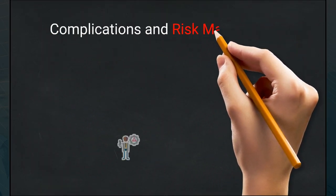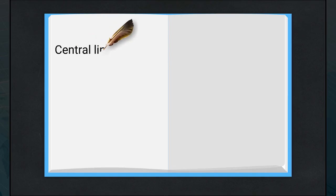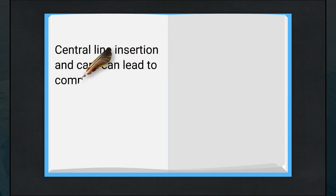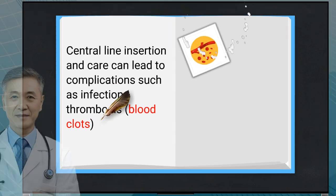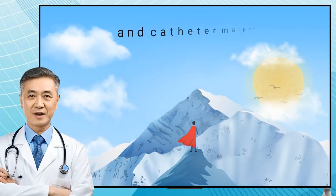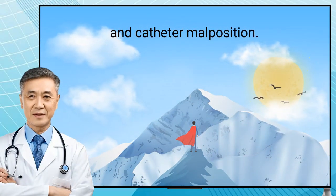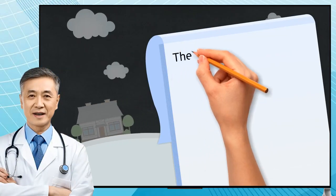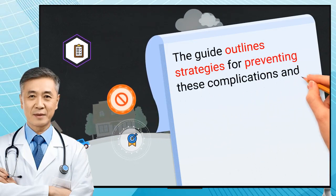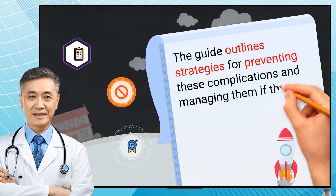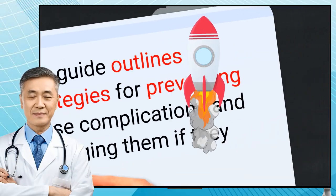Complications and risk management: central line insertion and care can lead to complications such as infection, thrombosis, blood clots, and catheter malposition. The guide outlines strategies for preventing these complications and managing them if they occur.